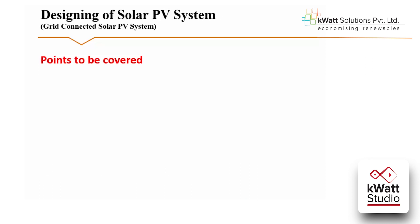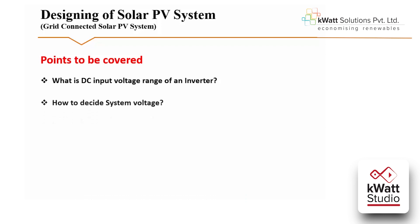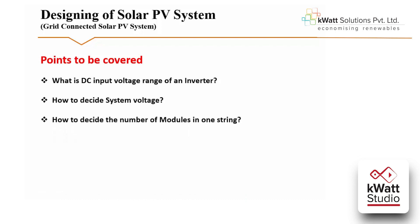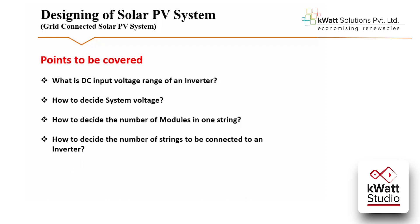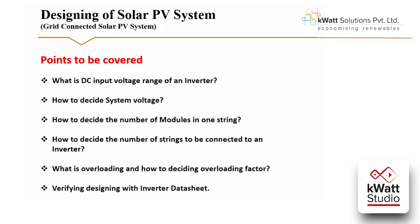Module 3 is designing of solar PV system. Here we are going to design a grid connected solar PV system. We will see what is the DC input voltage range of an inverter and how to decide system voltage — which is the voltage applied to the inverter. We will learn how to decide the number of modules in one string, and how to decide the number of strings connected to an inverter based on its input scope. We will also cover overloading factor, how to verify designing with an inverter data sheet, and will design our system as per that data sheet and its electrical parameters.